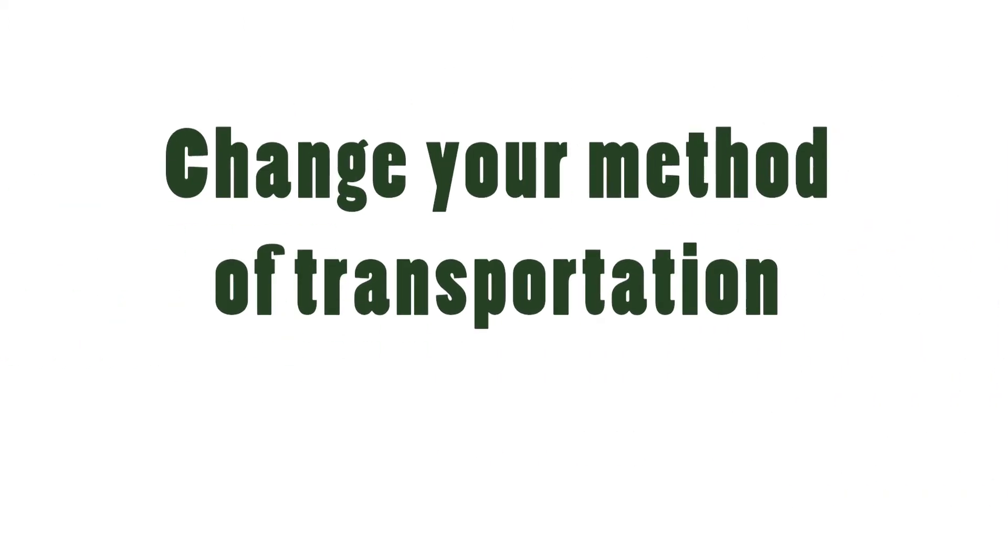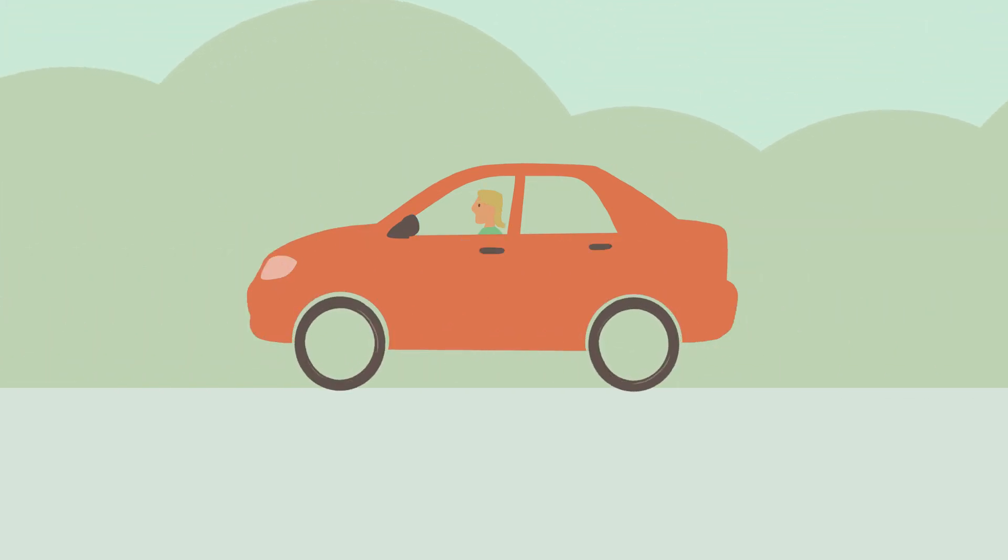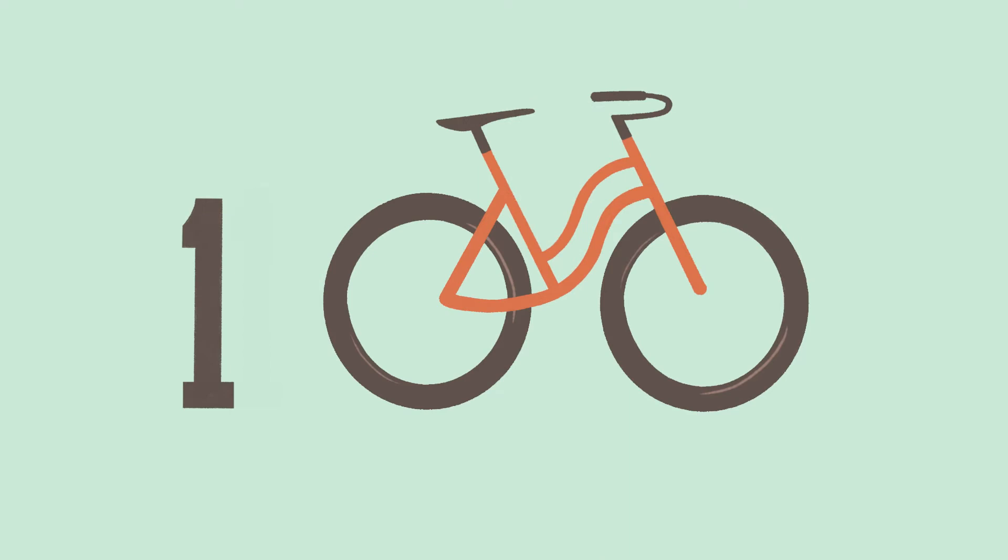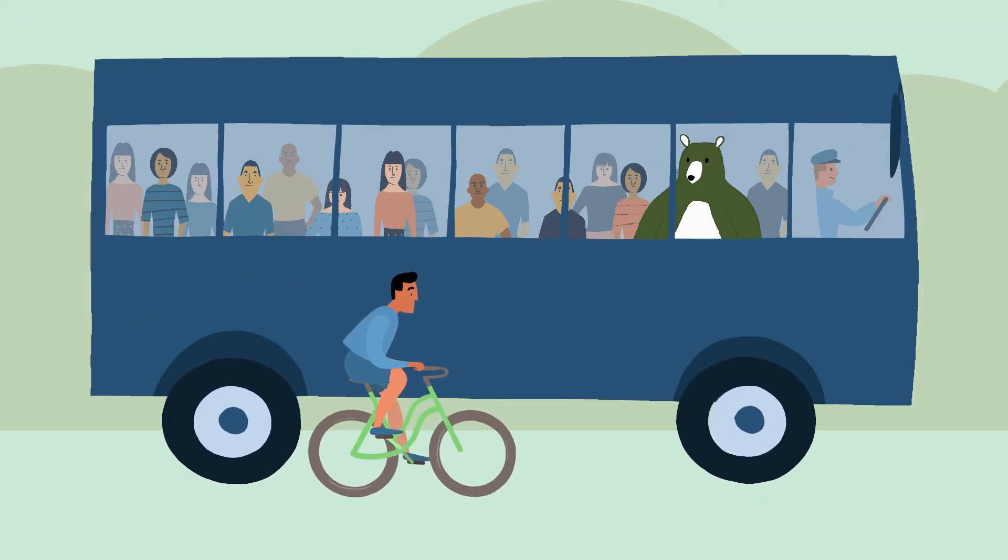First, change your method of transportation. Riding a bicycle uses less than 1% of the energy that's required to drive a car, so 100 people could travel by bicycle for the same energy it takes to drive one car. Public transportation allows more people to travel in fewer vehicles, reducing the negative effect travel has on climate change.